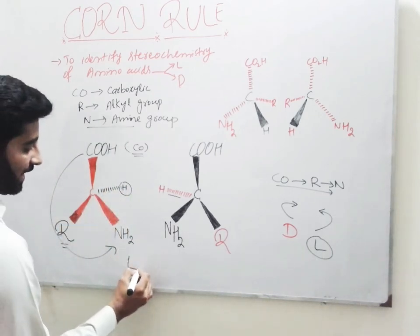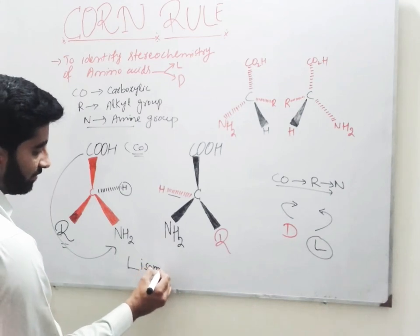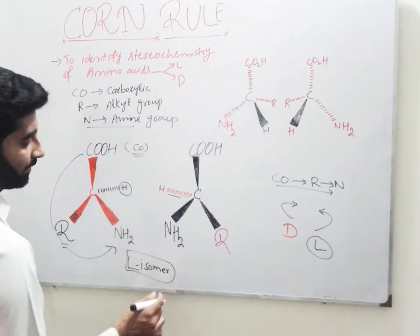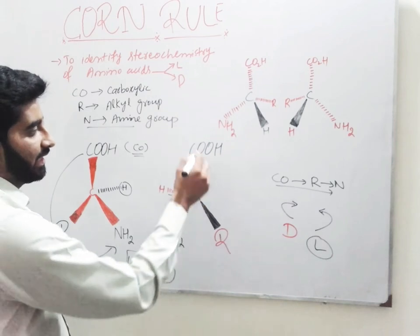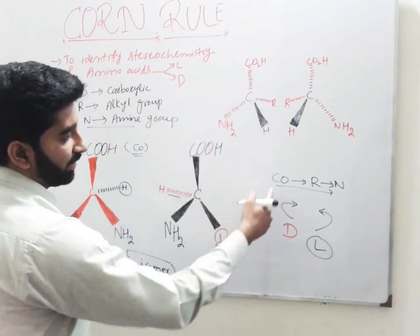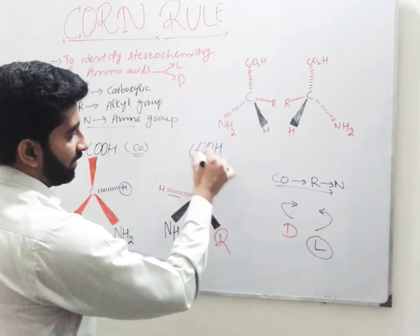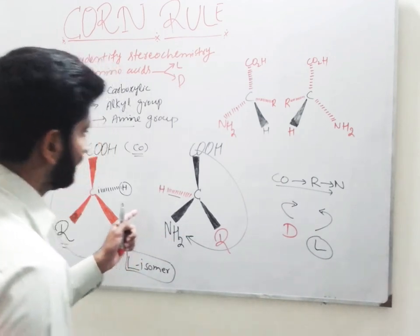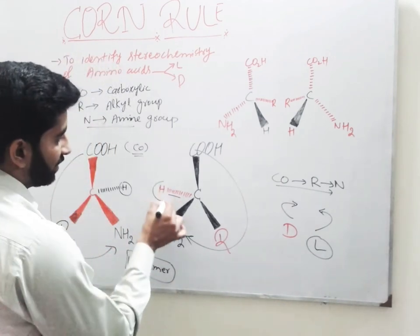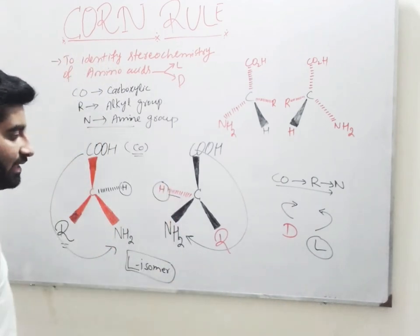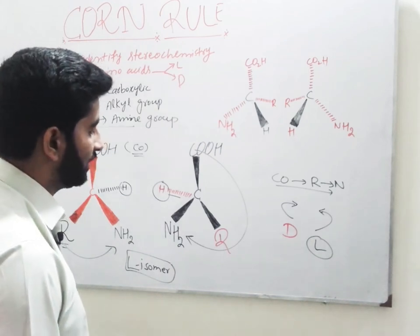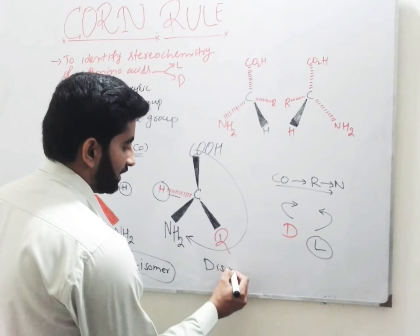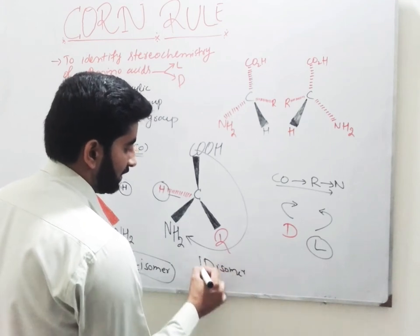So we assign it as L isomer or L amino acid. In this next molecule, we can see that the rotation of CON is clockwise, and our lowest priority group, hydrogen, is directed away from the observer. So we assign it as D isomer or D amino acid.